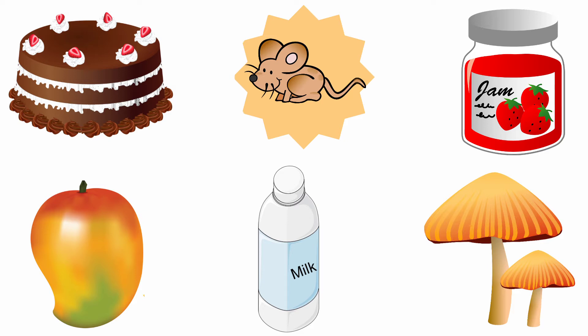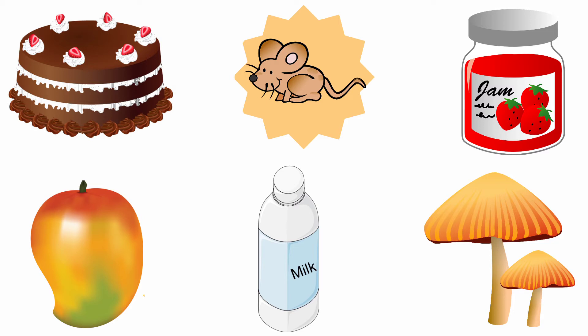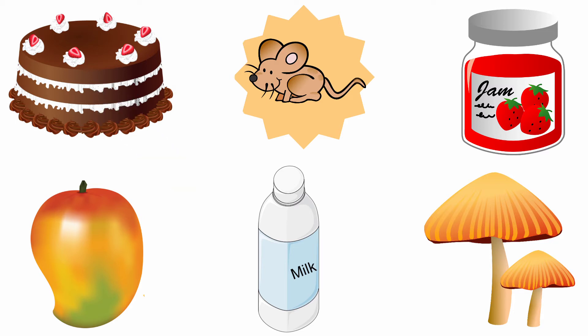The sound of the letter M is M. Look at the first picture, it is a cake. The beginning sound of the picture cake is K. And the sound of the letter M is M. The sound of the letter M and the beginning sound of the picture cake are different. So, we should not draw a line from mouse to cake.